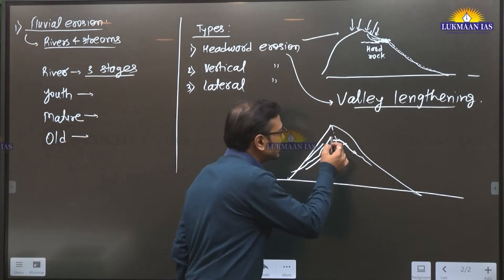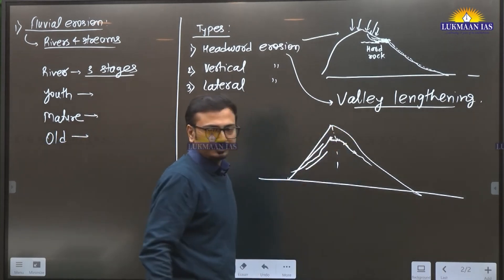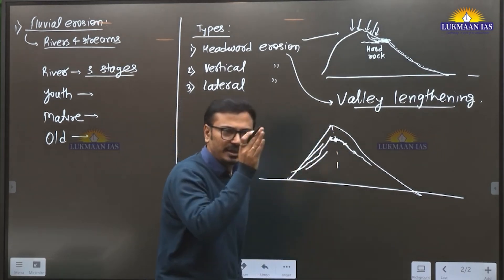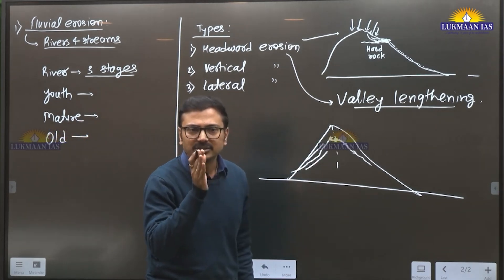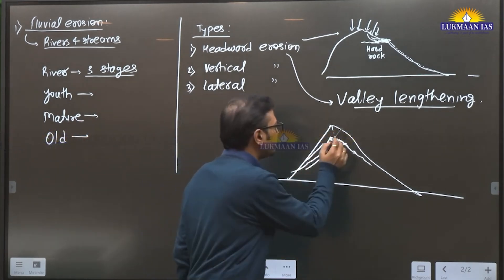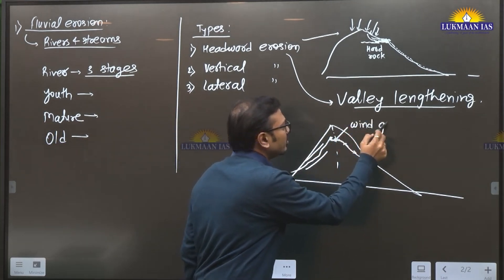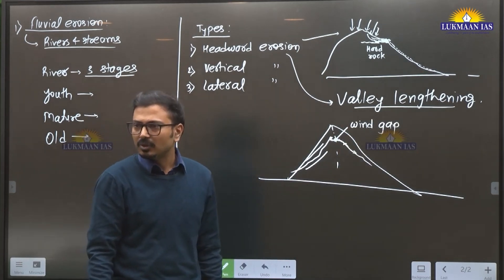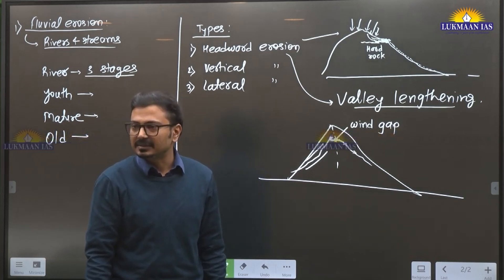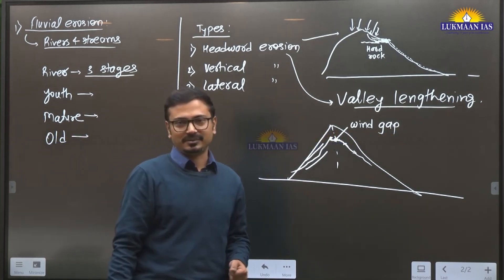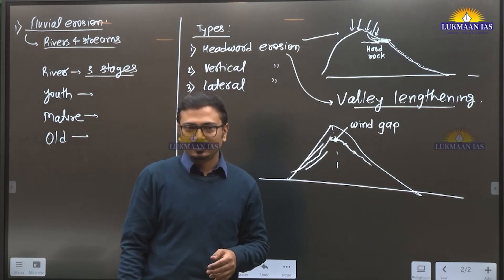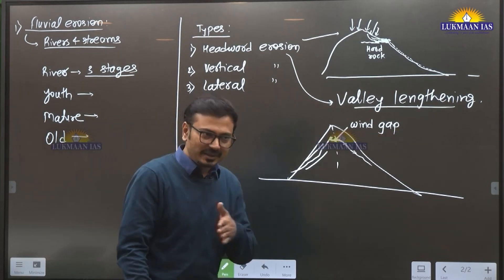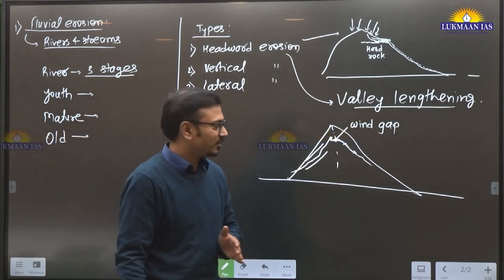Earlier, there was a water divide created by that ridge — that water divide has been removed. This is called the elbow of river capture. This particular region where the ridge has been cut by that stream is called a wind gap. Many times, the roads crossing the mountains through passes are basically wind gaps created by rivers — mountain passes. We can see this in a lot of places.